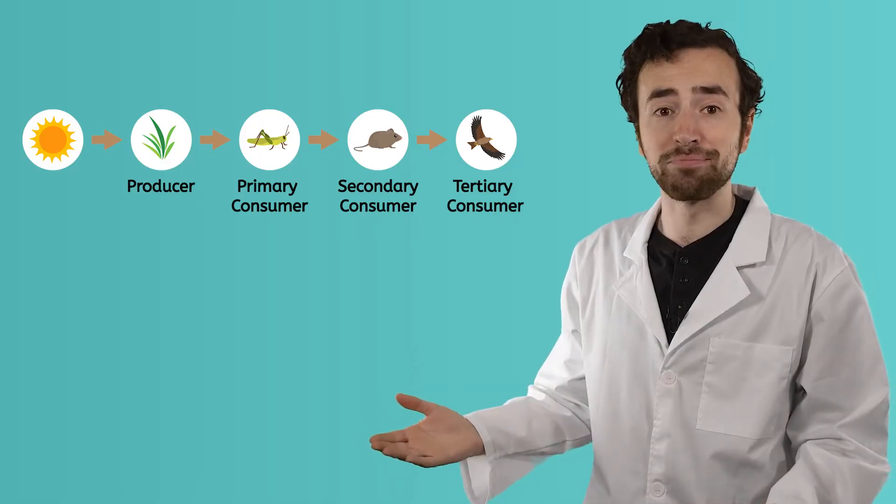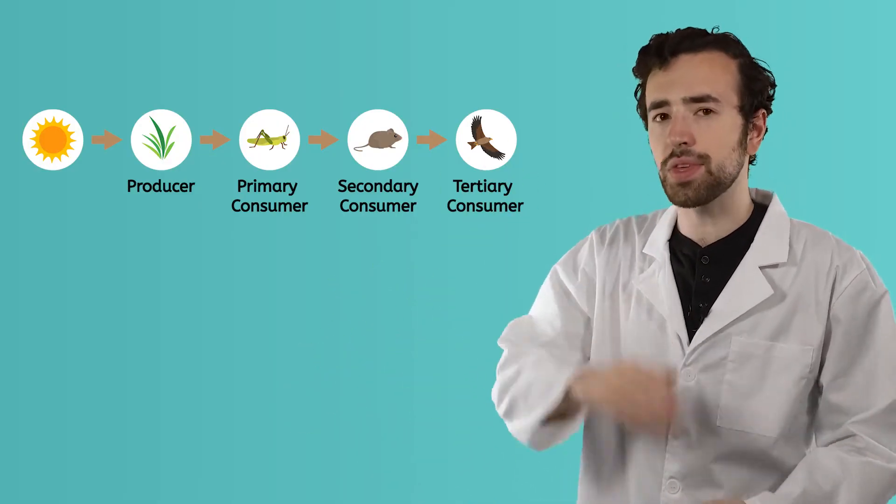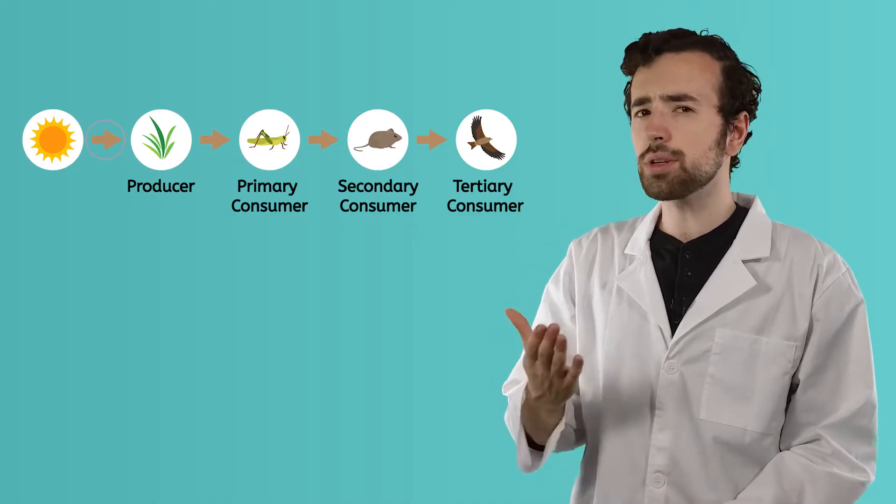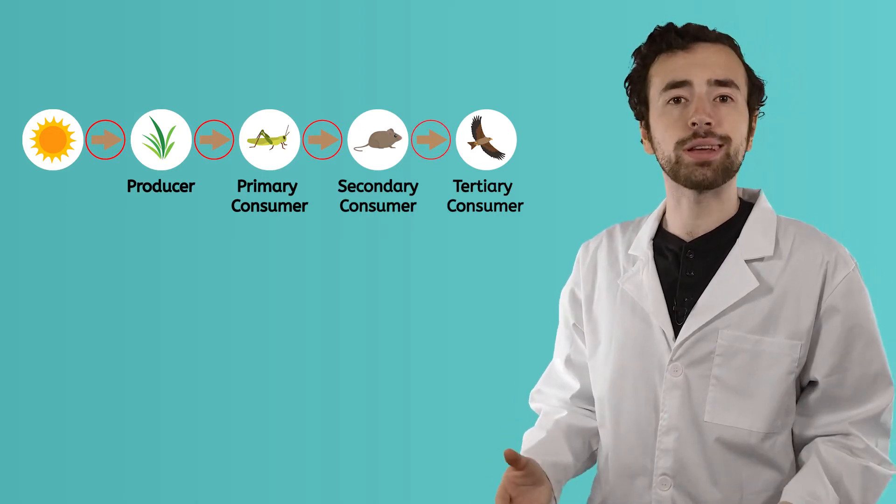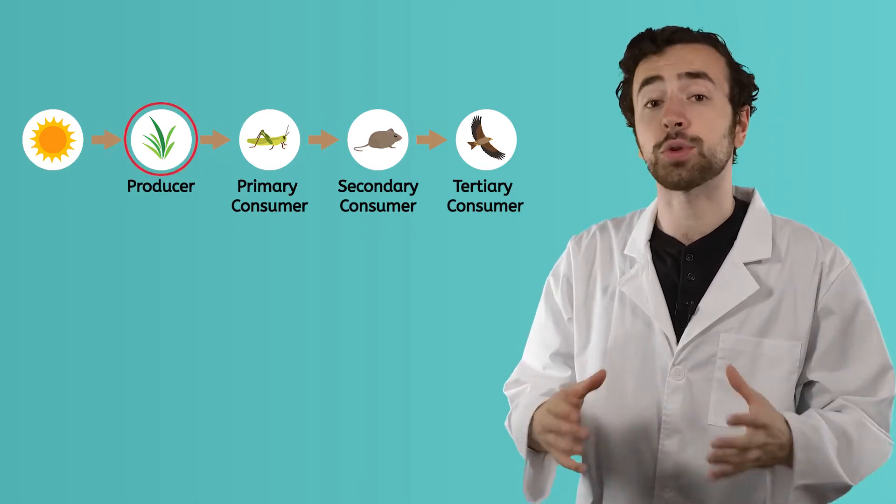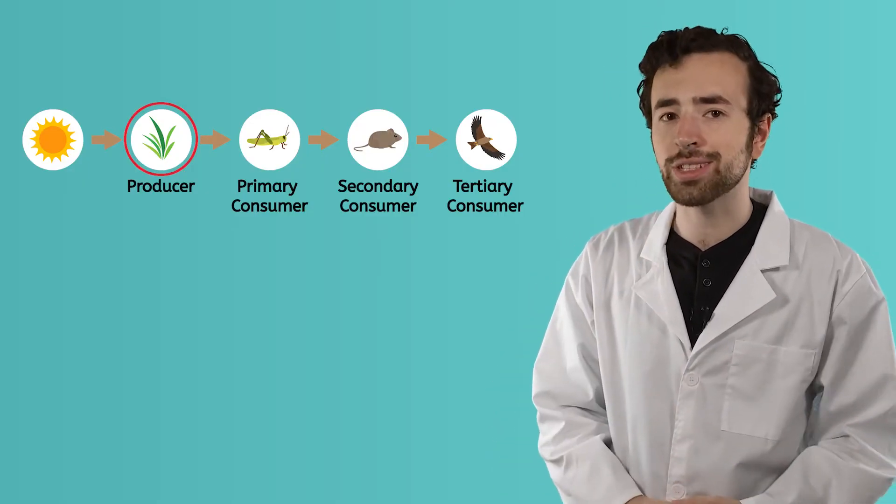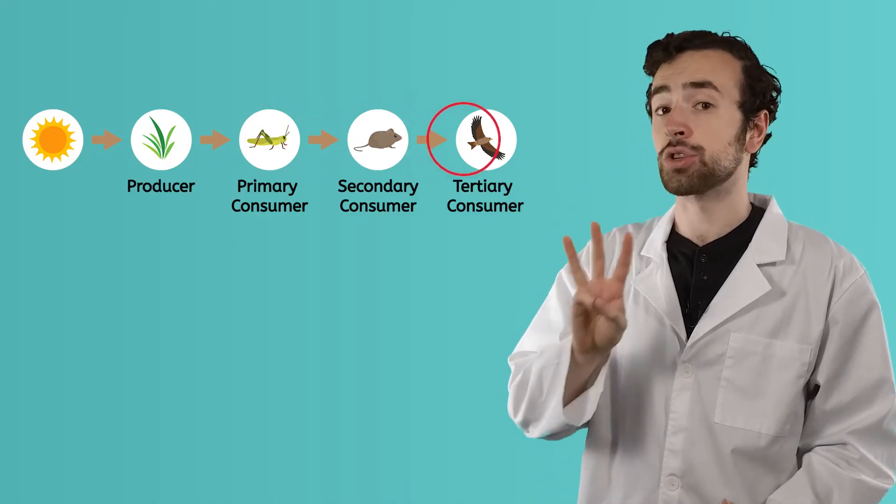And there we have it. A food chain. Energy flows from the sun and through the ecosystem, ending with a tertiary consumer. Notice the way the arrows are pointing, showing us the direction the energy is flowing. Food chains always contain a producer to transform the sun's energy and at least one of each type of consumer. Primary, secondary, and tertiary.